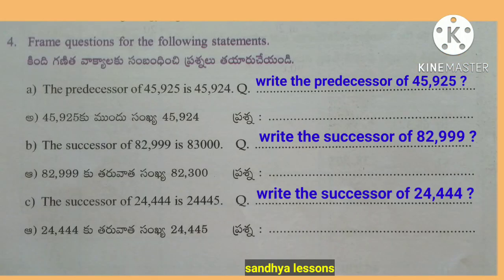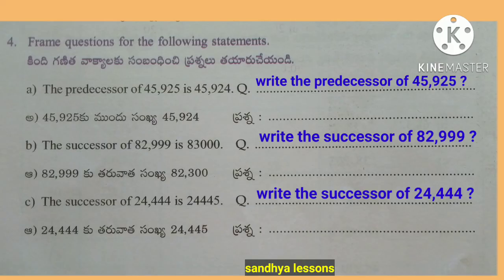Fourth question: frame questions for the following statements. A: The predecessor of 45,925 is 45,924 — question: Write the predecessor of 45,925. B: The successor of 82,999 is 83,000 — question: Write the successor of 82,999. C: The successor of 24,444 is 24,445 — question: Write the successor of 24,444.